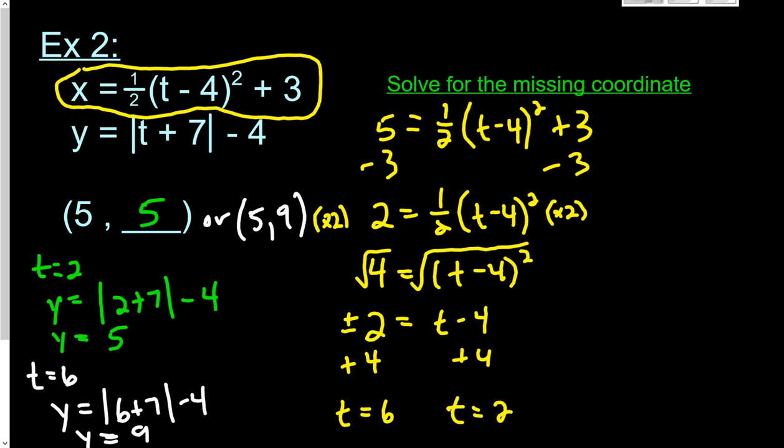All right. So a little bit different than the first example. This one, you get two answers because we end up with a plus or minus situation when we took the square root.